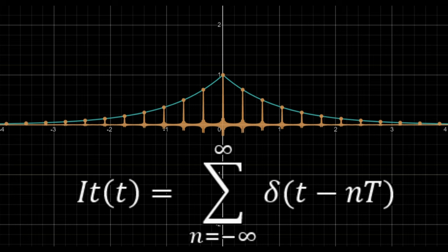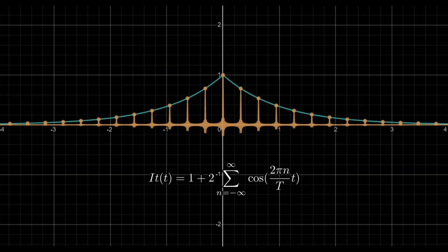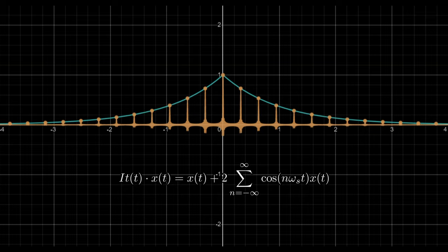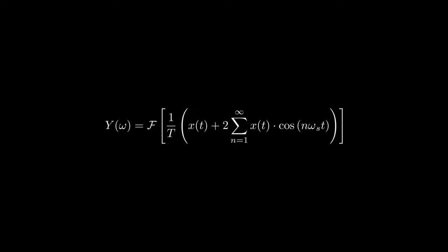An impulse train with period t can be expressed as this sum. Let's substitute omega s for 2π over t. Multiplying by the signal will give us this sum. Luckily, we have a formula for the Fourier transform of a function multiplied by a cosine.